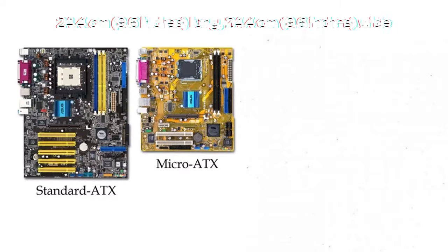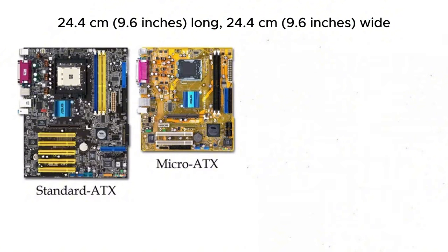Next, we have the Micro ATX motherboard. This is the smaller version of the ATX motherboard, measuring 244 by 244 mm. It is a popular choice for budget builds or compact systems, offering a balance between functionality and space-saving. While it has fewer PCIe and RAM slots than an ATX, it still supports multiple expansions, making it a great option for users who want a solid, affordable motherboard without sacrificing too much performance.